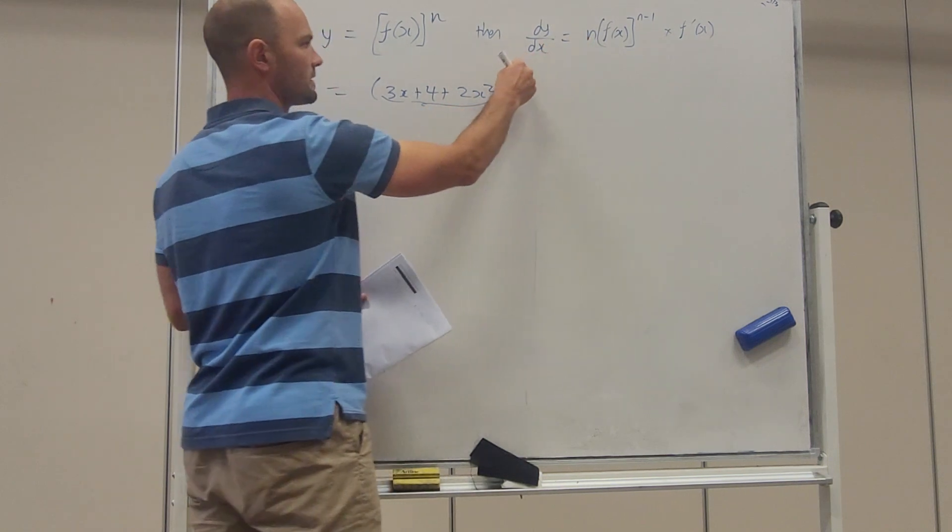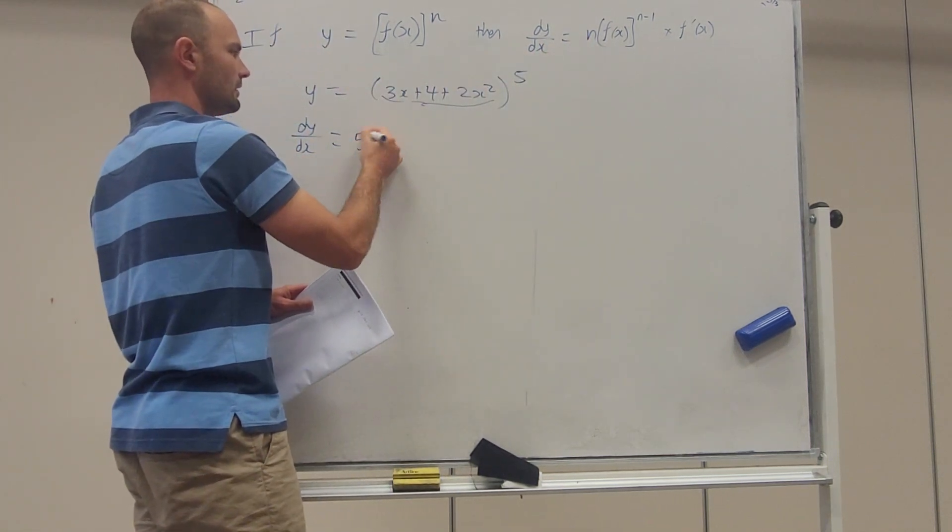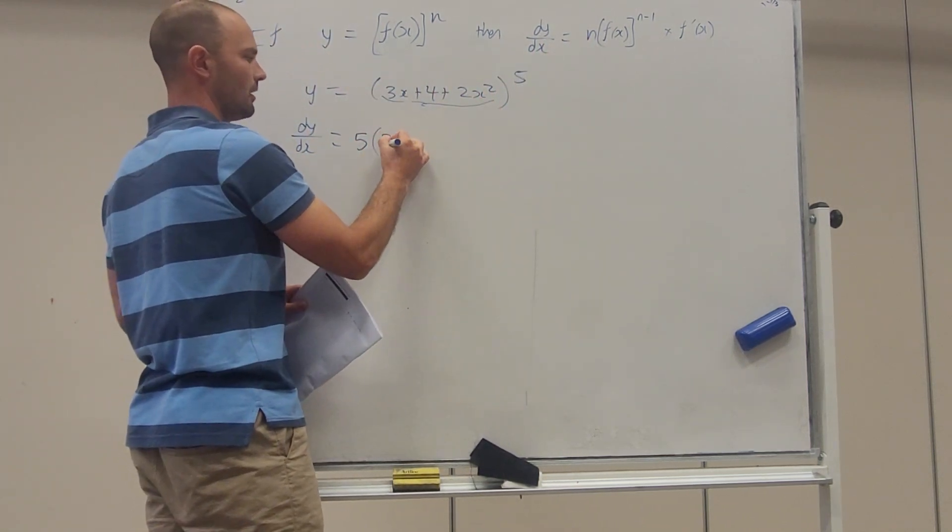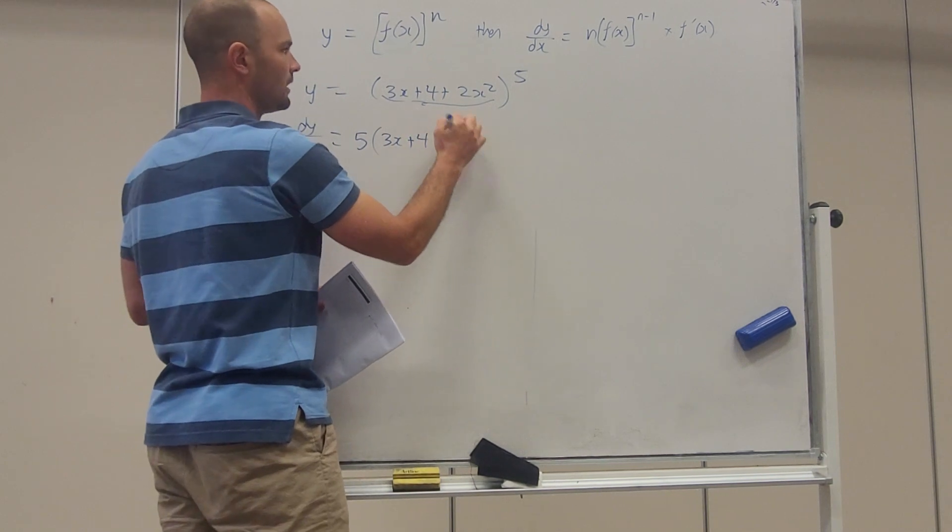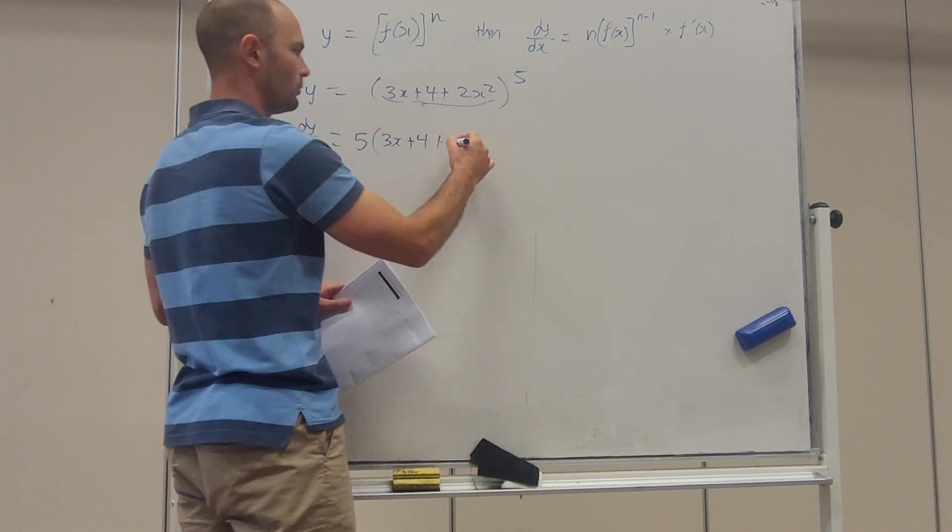It becomes n. So that power, n, and then just times f(x). Alright, type it in again. Is that a 4x or just a 4? No, just a 4.